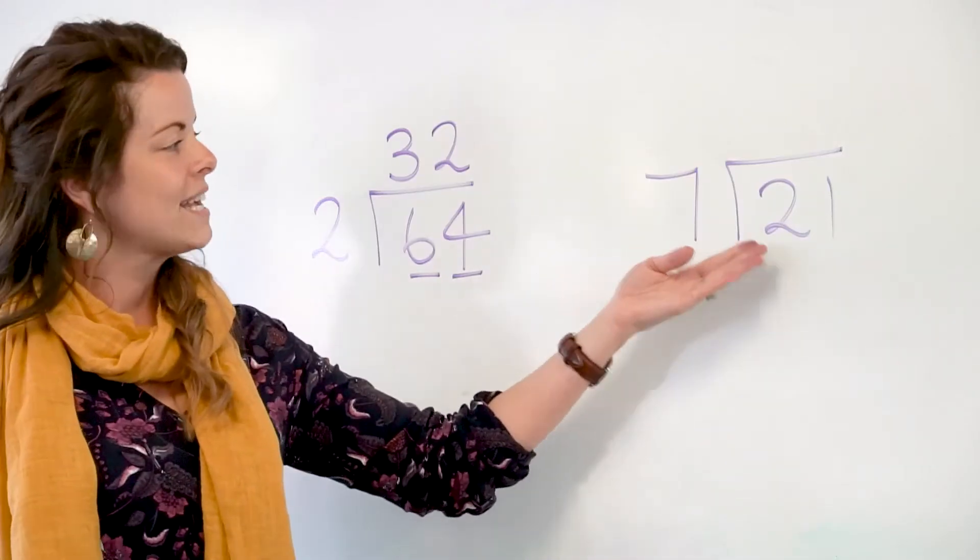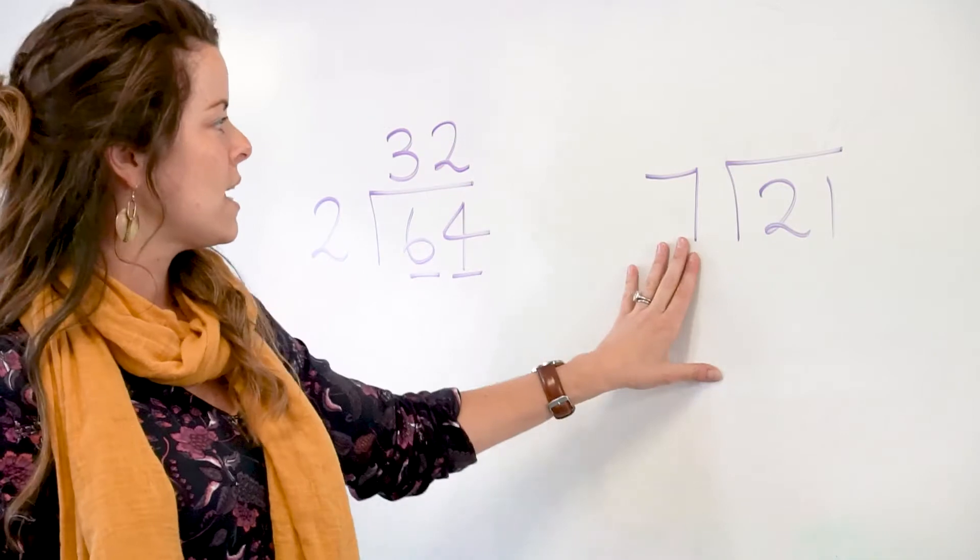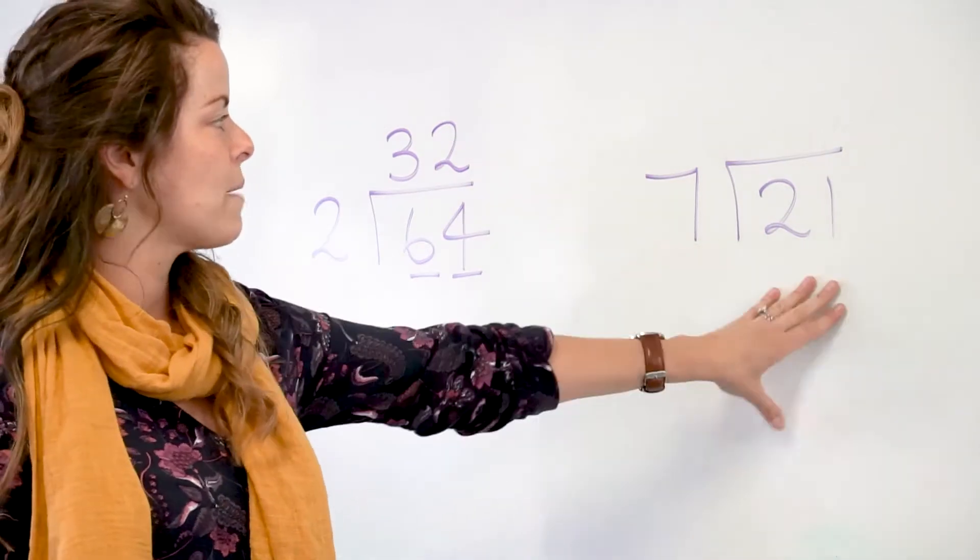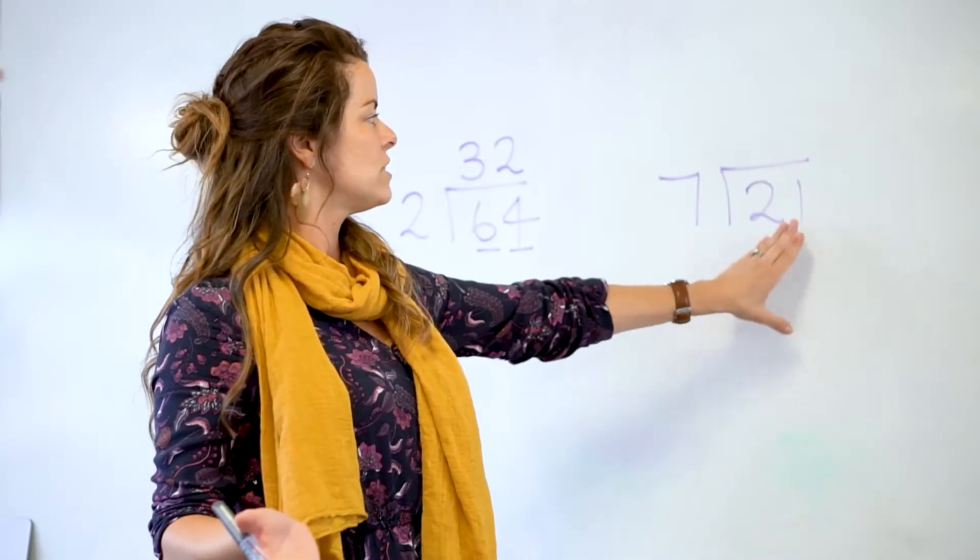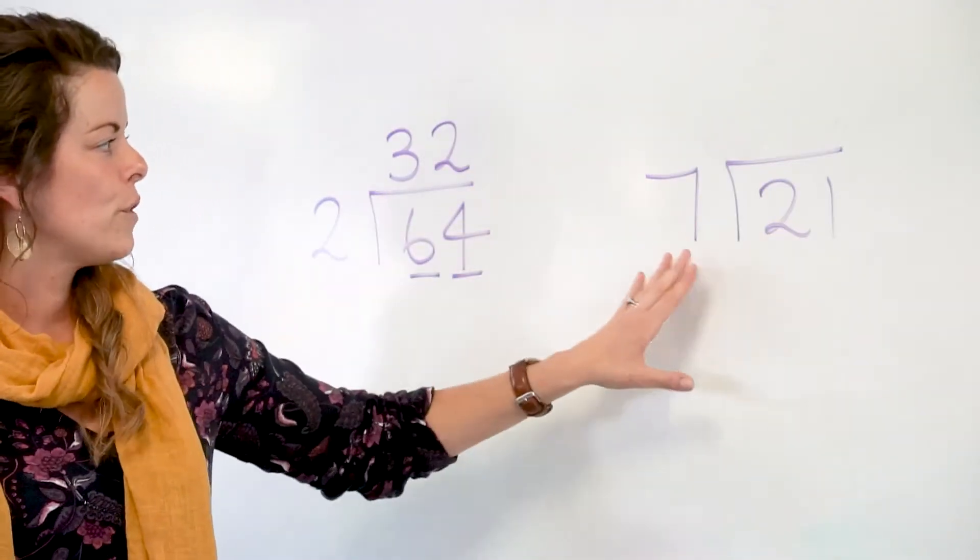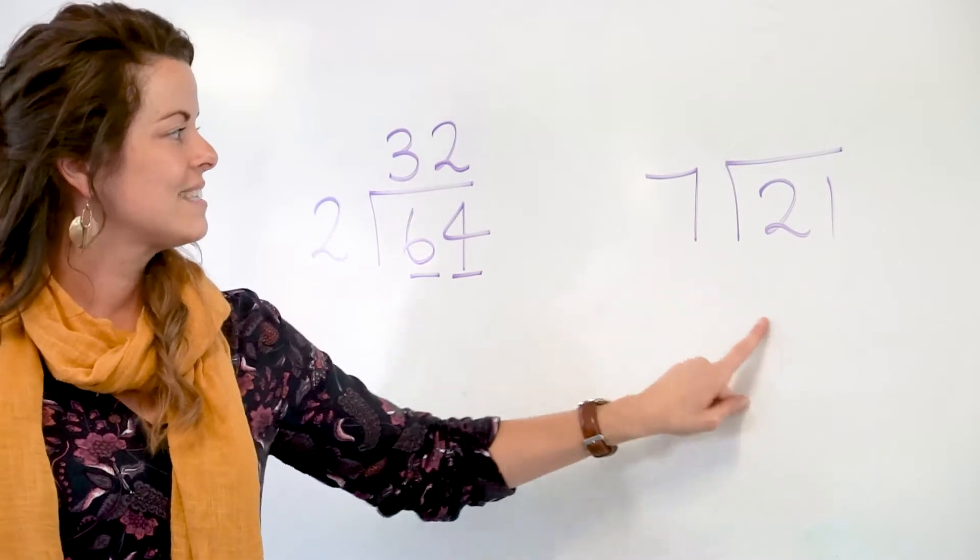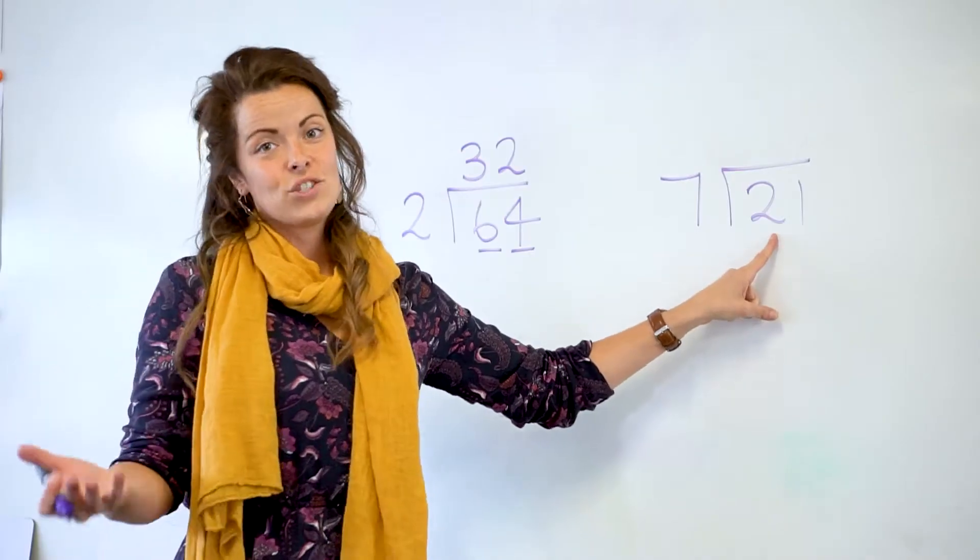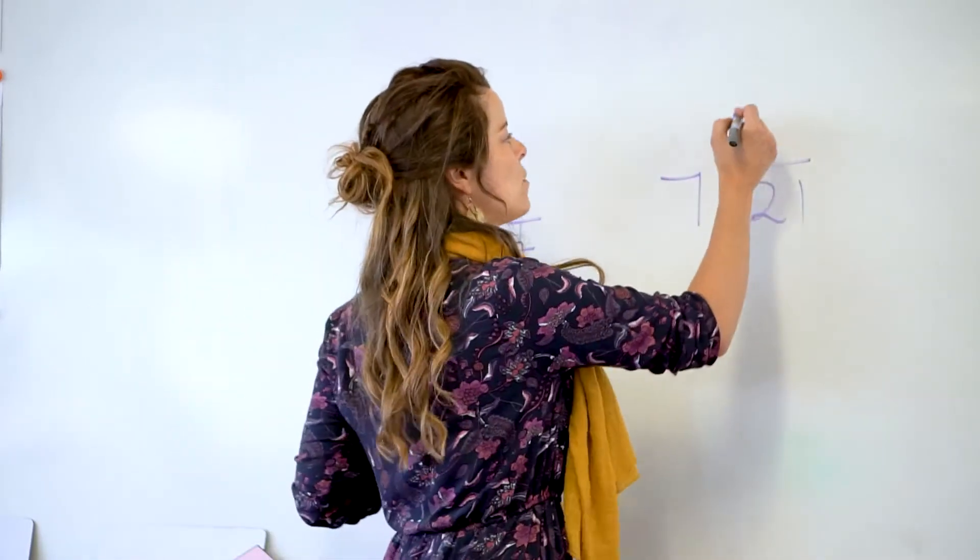Now if we look at the problem over here, we would be looking at the same questions of how many times does 7 go into 21, or what is 21 divided by 7. But we have to use a different method here because if we ask how many times does 7 go into 2, we can't do that. So what we do is we write a 0 up the top.